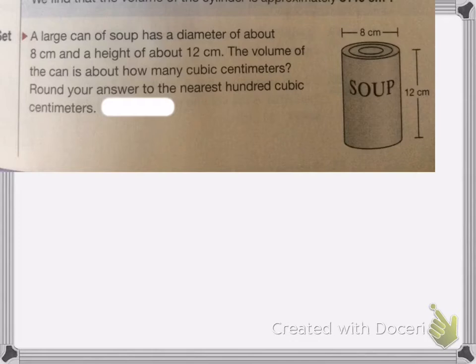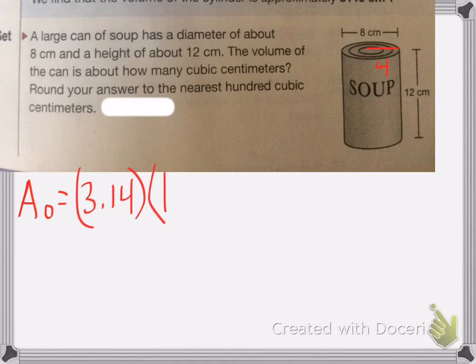I first need to find the radius. The radius is half of the diameter, so that's going to be 4. The area of my circle is going to equal 3.14 times 4 squared, which is 16.